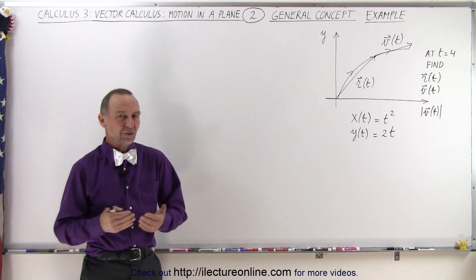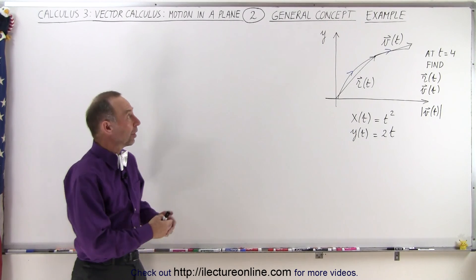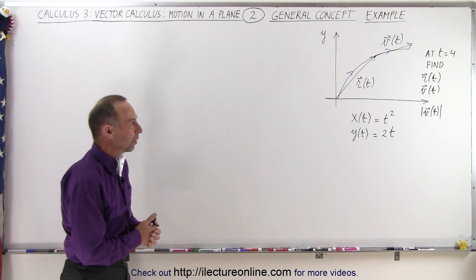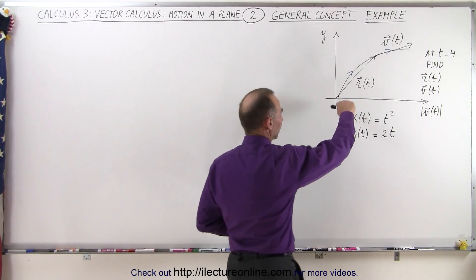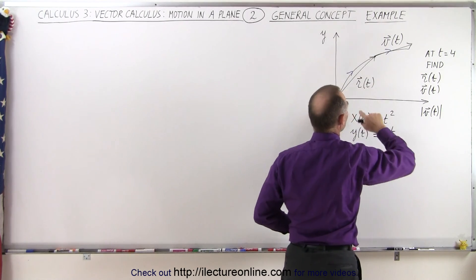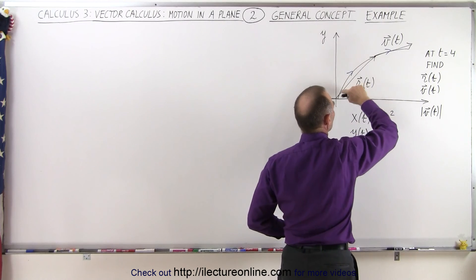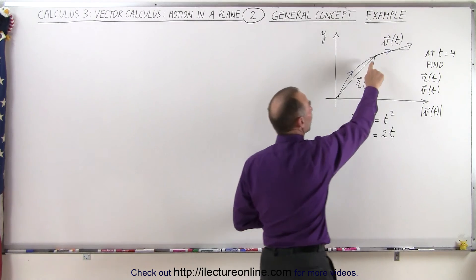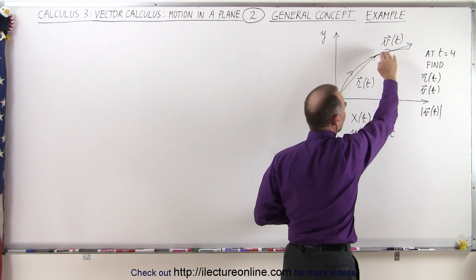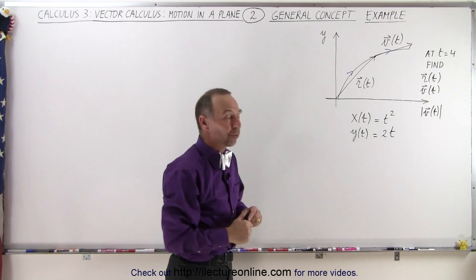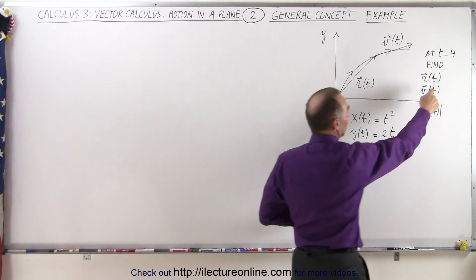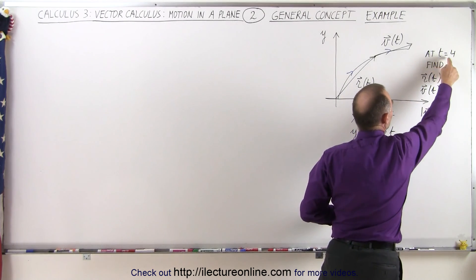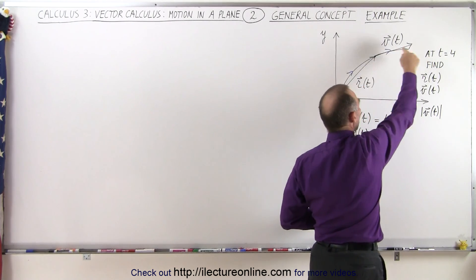Welcome to our Lecture Online. Let's start with a simple example on the basic concepts of motion in a plane using vector notation. Here we have a curve, and we're traveling along this curve at some amount of time. We have a position vector pointing to any point along the curve, and a velocity vector from that point that will be parallel to the curve at that point. We're trying to find the position vector, the velocity vector, and the magnitude of the velocity — the speed of a particle at time equals zero moving along that curve.